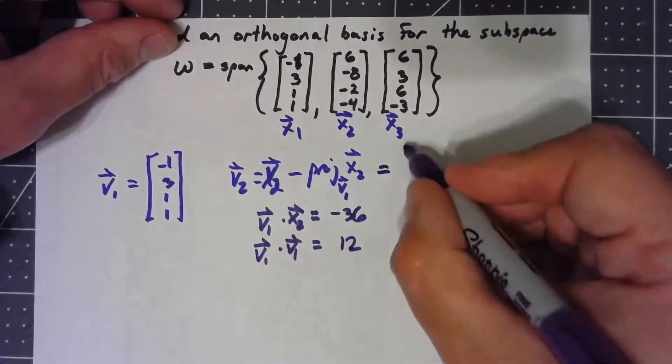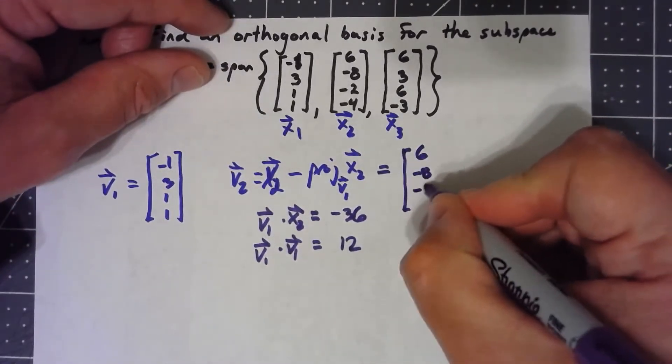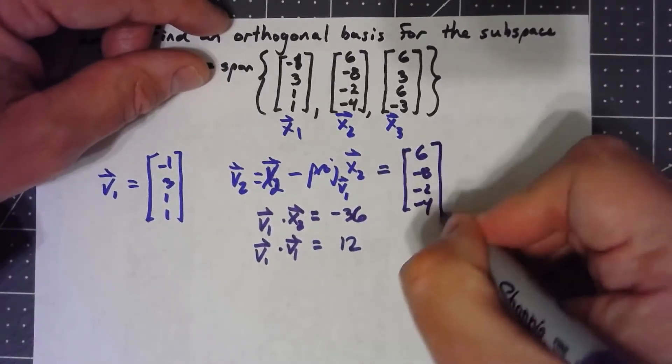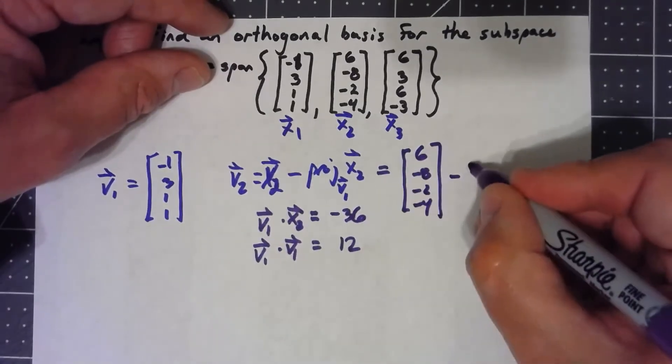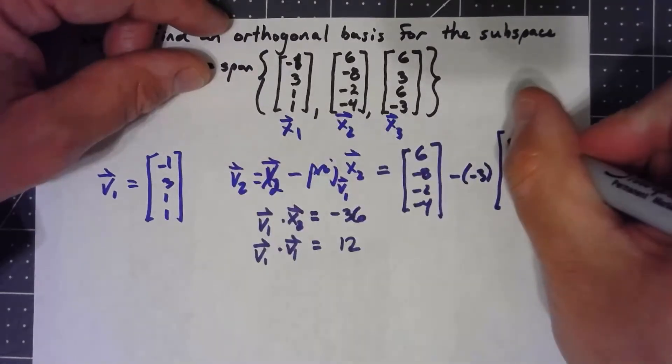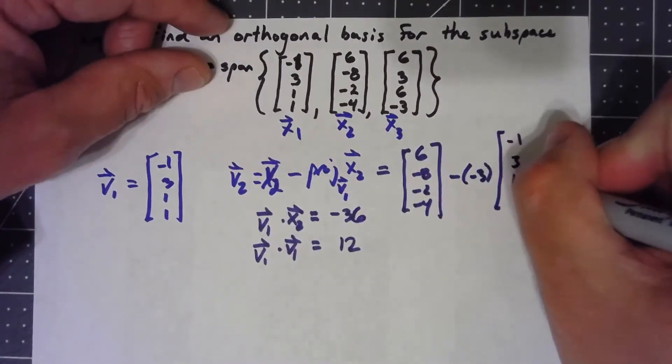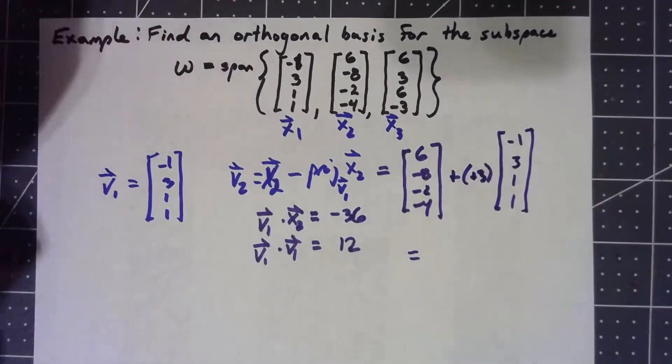So what I have here, my x2 vector, 6, negative 8, negative 2, negative 4, minus a negative 36 over 12 times the v1 vector.